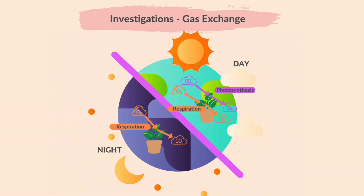Let's observe the effect of light and dark conditions on gas exchange in a plant. Plants respire in the light and in the dark. Therefore, plant cells take in oxygen and release carbon dioxide at all times. During daylight, plants photosynthesize, taking in carbon dioxide and producing oxygen as a waste product.